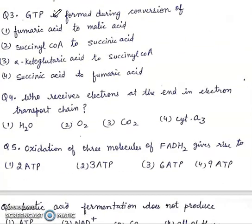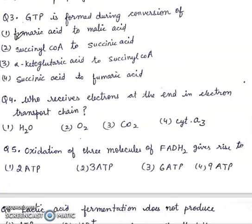Question three: GTP is formed during the conversion of fumaric acid to malic acid, succinyl coenzyme A to succinic acid, alpha-ketoglutaric acid to succinyl coenzyme A, or succinic acid to fumaric acid? Right answer will be second, succinyl coenzyme A to succinic acid.